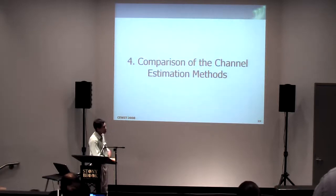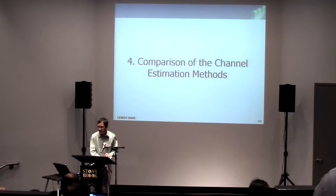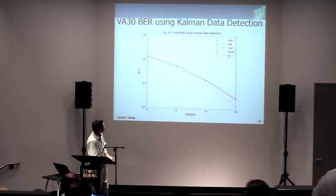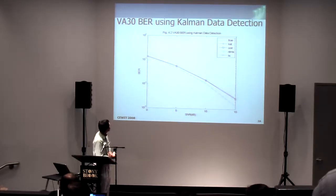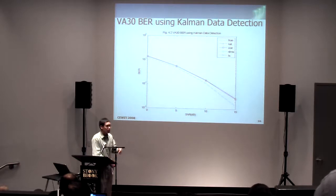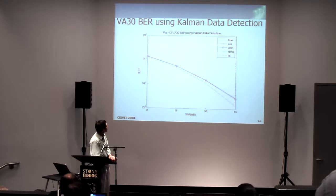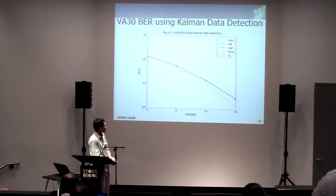So let's look at comparison using this comparison methodology. Let's actually compare the methods. Here's the curve. This is VA30, it stands for the vehicle or mobile that's moving at 30 kilometers per hour, so relatively slow moving. And we use this Kalman data detection method to get our bit error rate result. As you can see here, the true channel is given by a blue dotted curve, and the channel estimates, the bit error rate corresponding to the channel estimates, are given by these other curves. So you can see that they're all pretty much the same. We have no improvement and no difference for the slow-moving case.